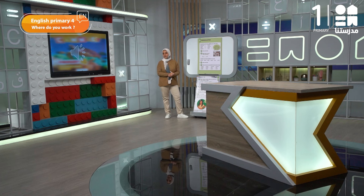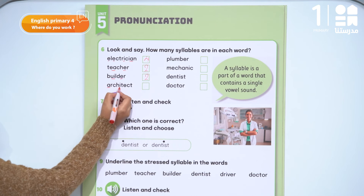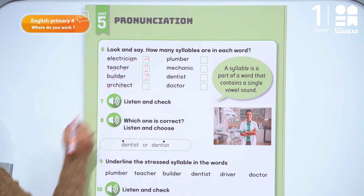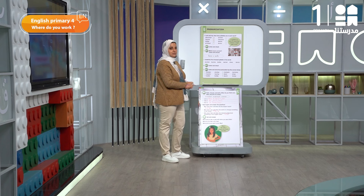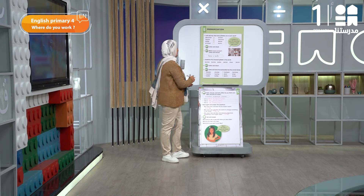Architect. We have A, we have I, and we have E. So I will divide the word into three syllables.